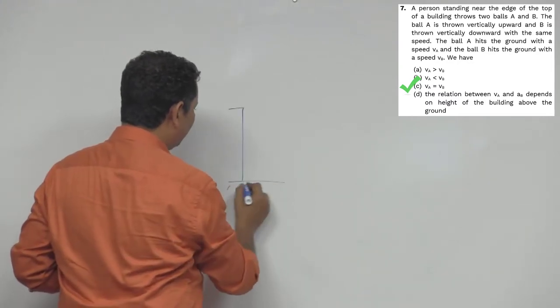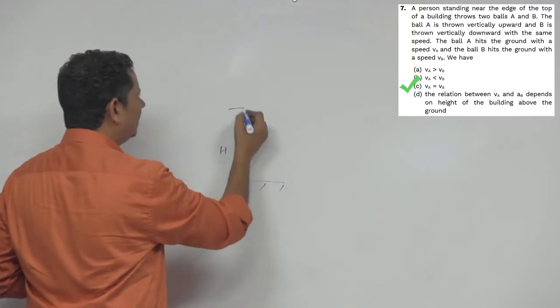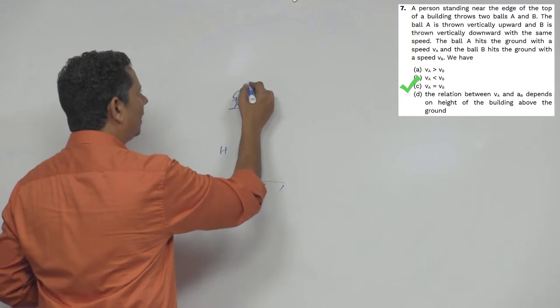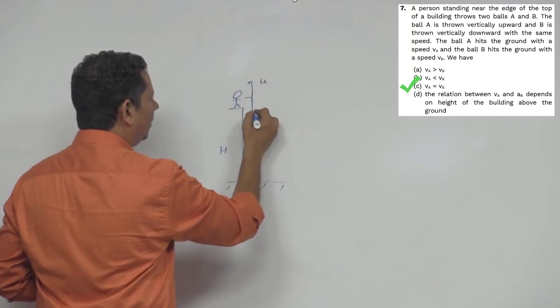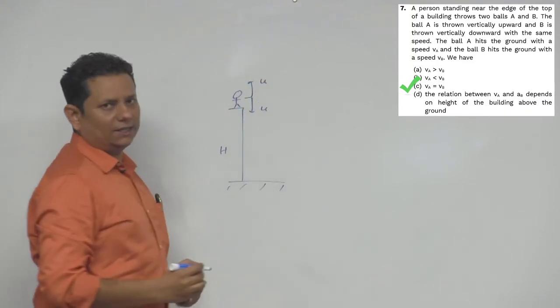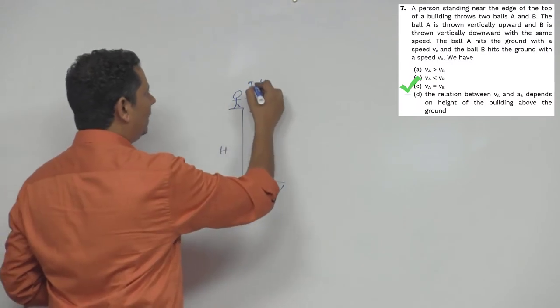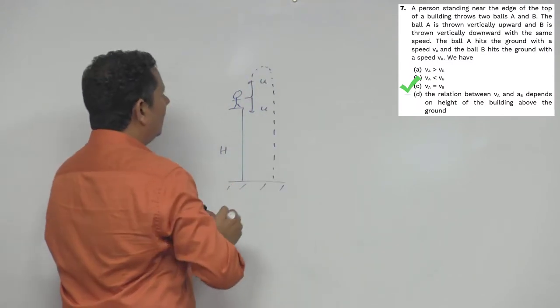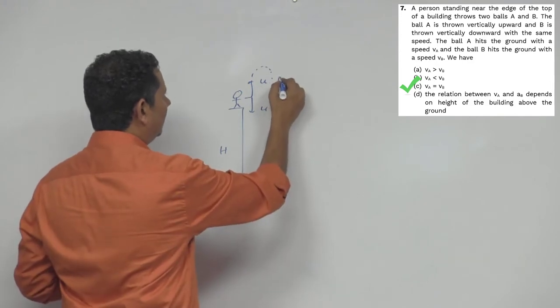Let me show you the situation. So the scenario is there's a building here, let's say its height is h. A person is standing here and has thrown two balls - A is thrown with velocity u upward and another ball is thrown with velocity u downward. Now the ball A that was thrown follows a path like this.